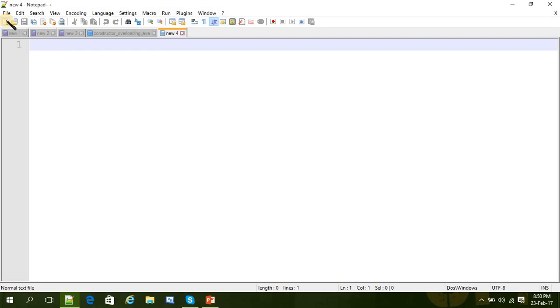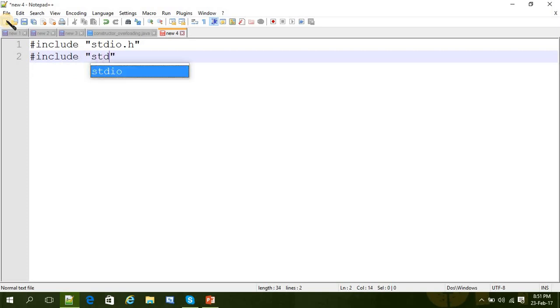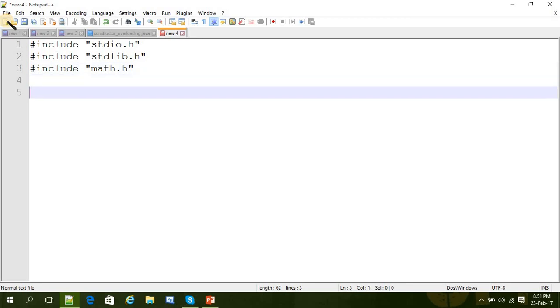Here is the program in C for bisection method. Let's start. Let's include stdio.h, stdlib.h, and we need that math.h header file to use the fabs function.